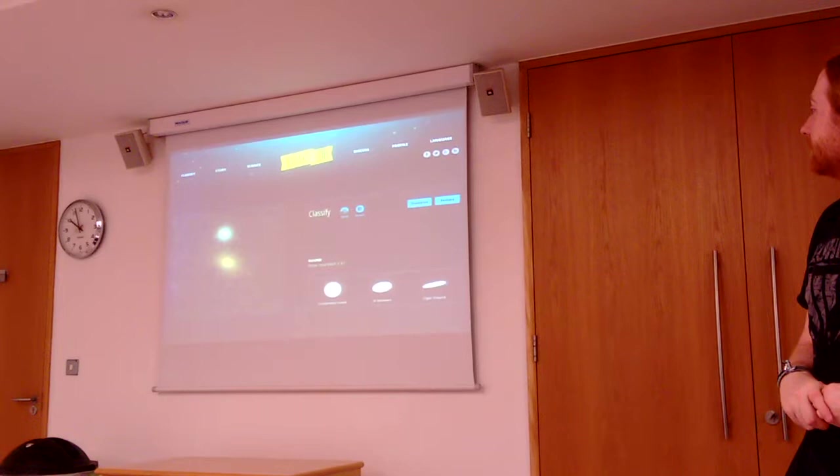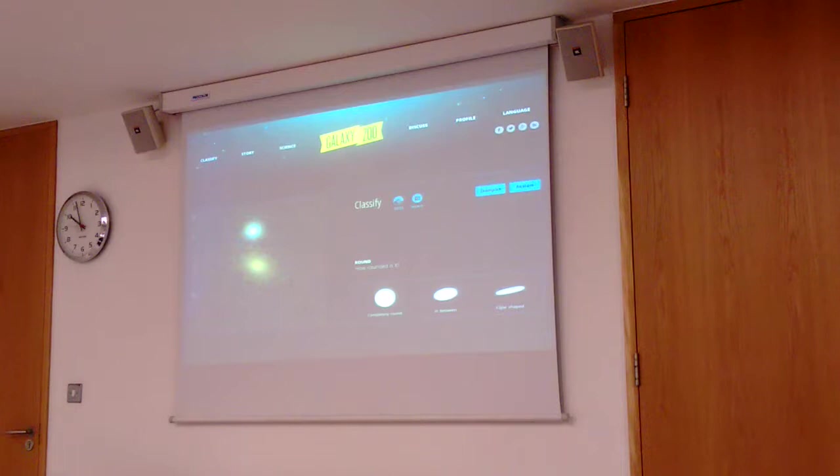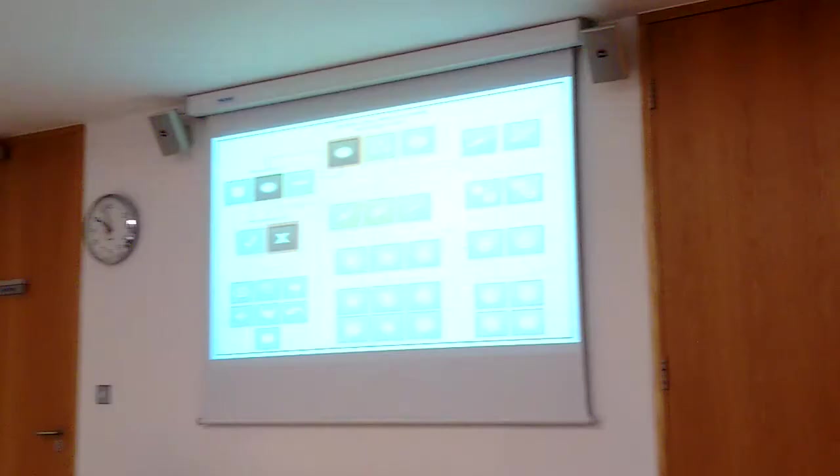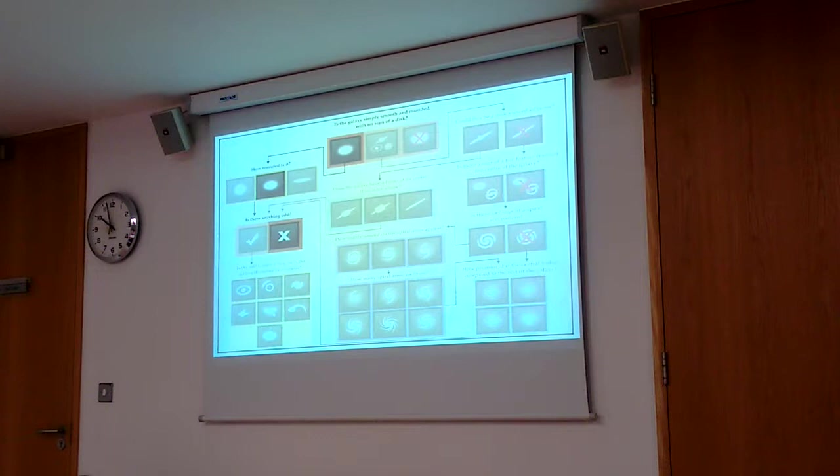We said it's smooth and rounded. So how round is it? I'm going to say this is not really round and not really cigar shaped, sort of in between. And is there anything odd about this galaxy? Not really. So that's it, we've answered three questions. And there's actually 11 of these questions in total, and they're organized in this decision tree. And the questions you get asked obviously depend on the answers that you gave to previous questions. So this question, how round it is, only really makes sense if you said that it was a rounded galaxy in the first place.